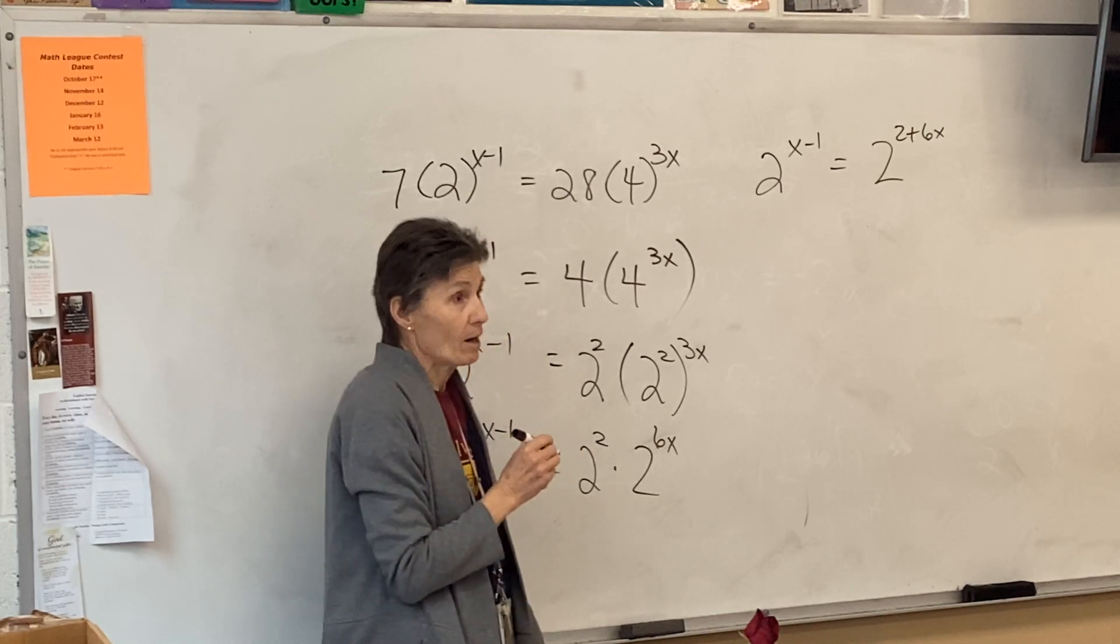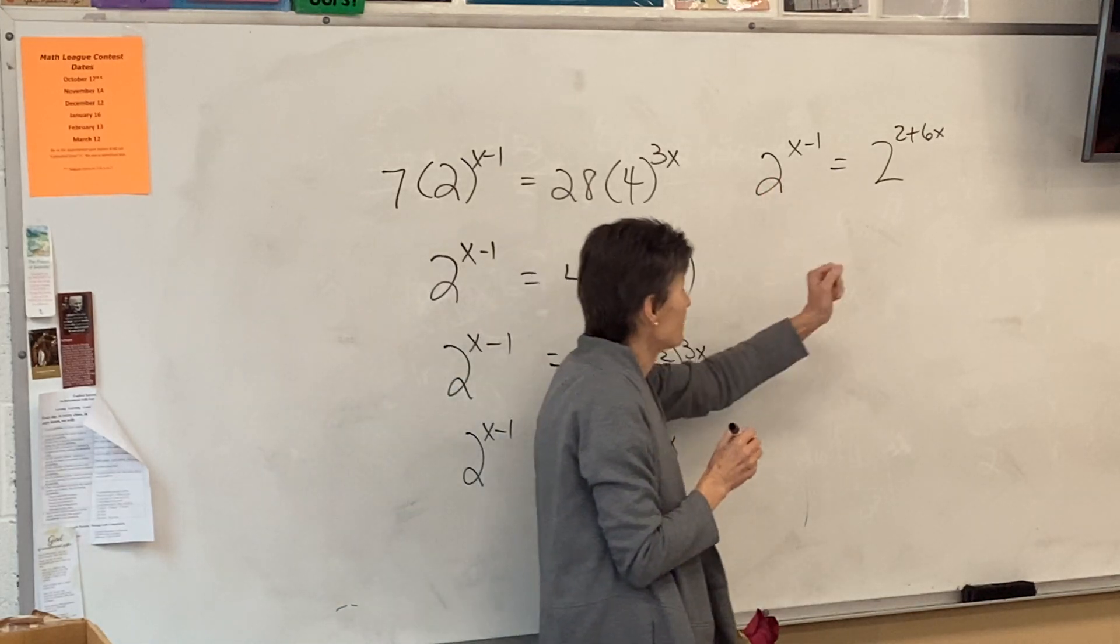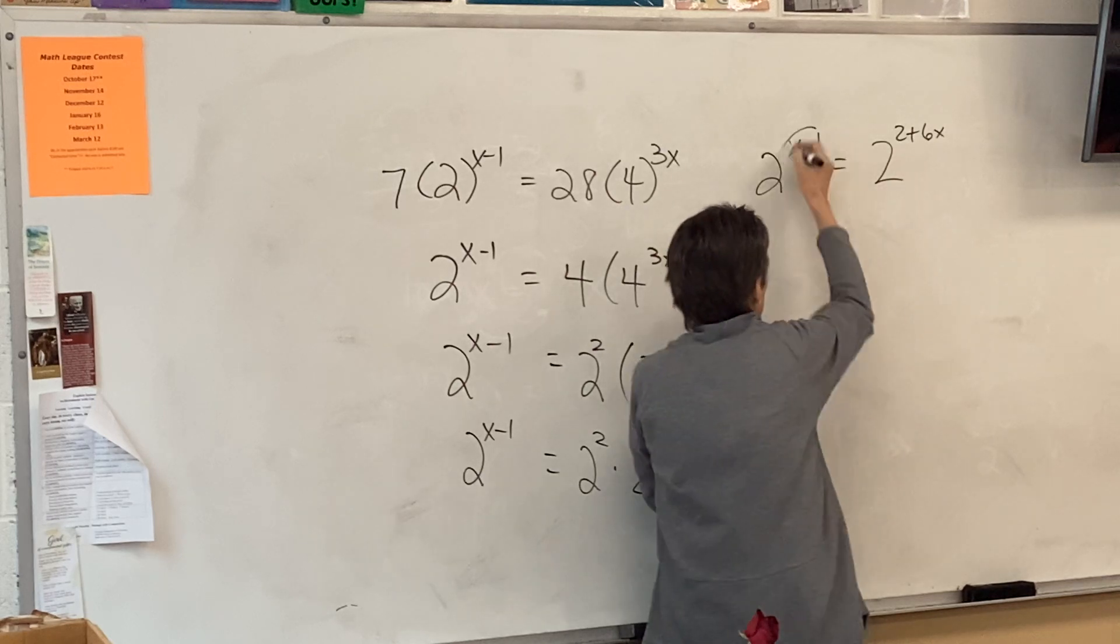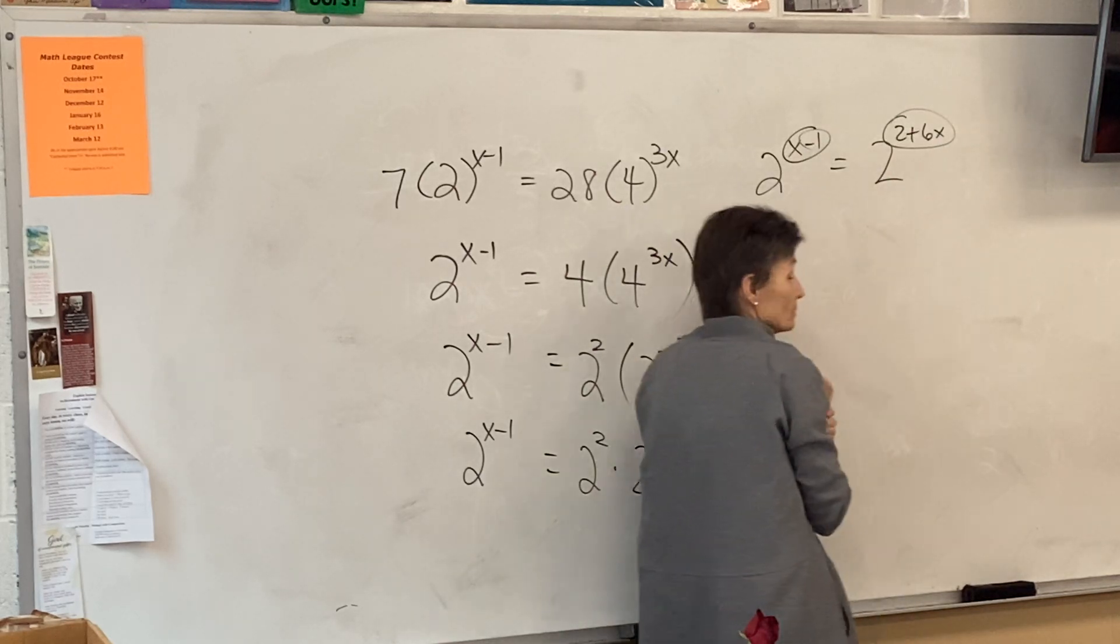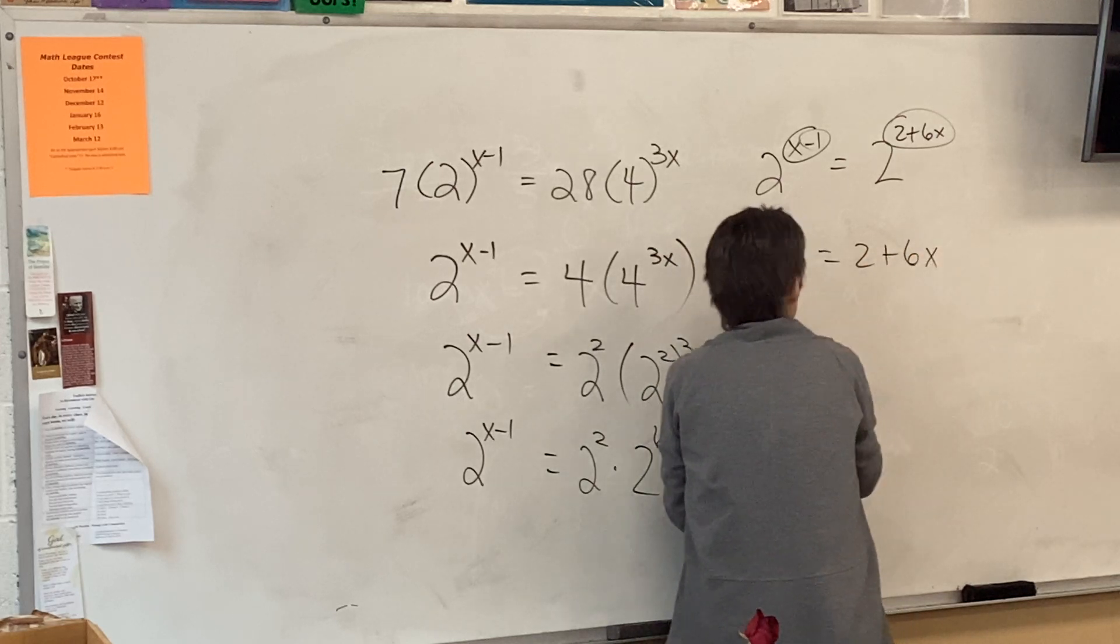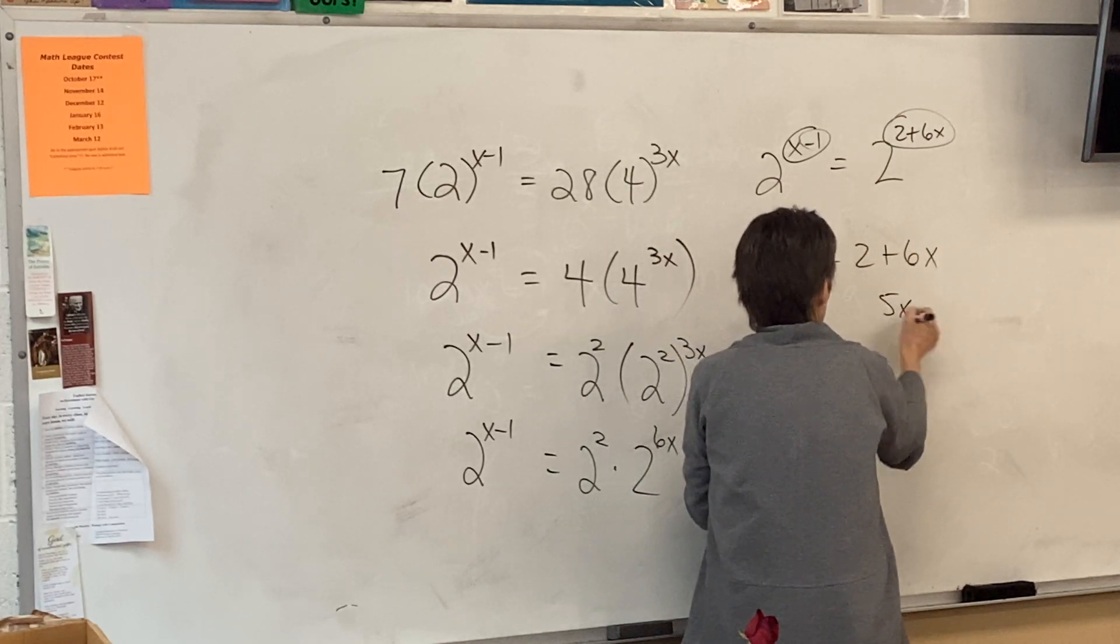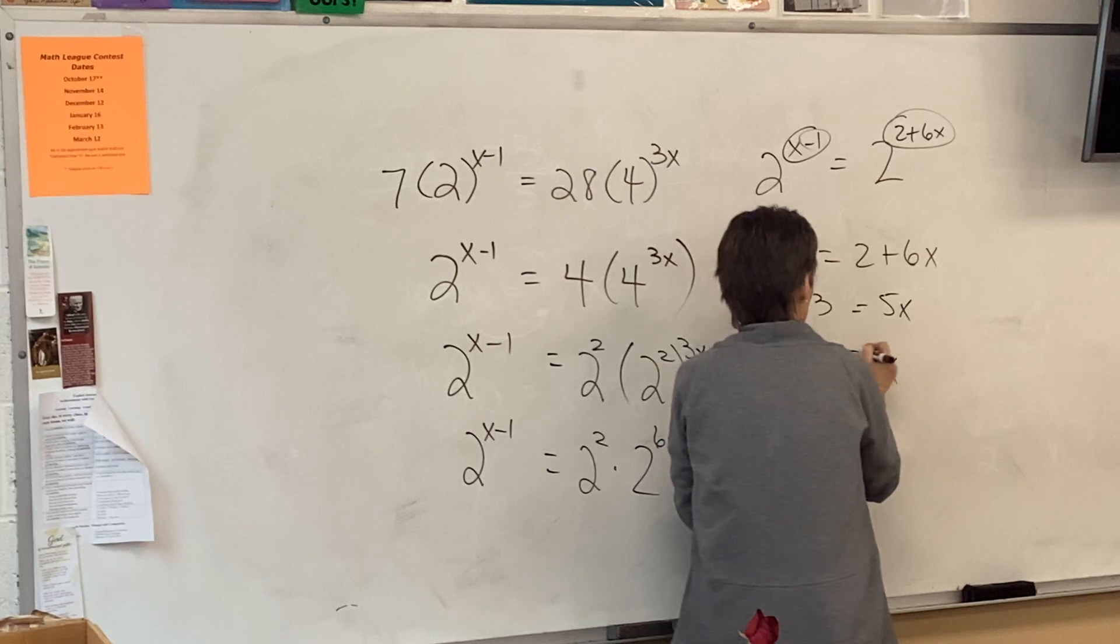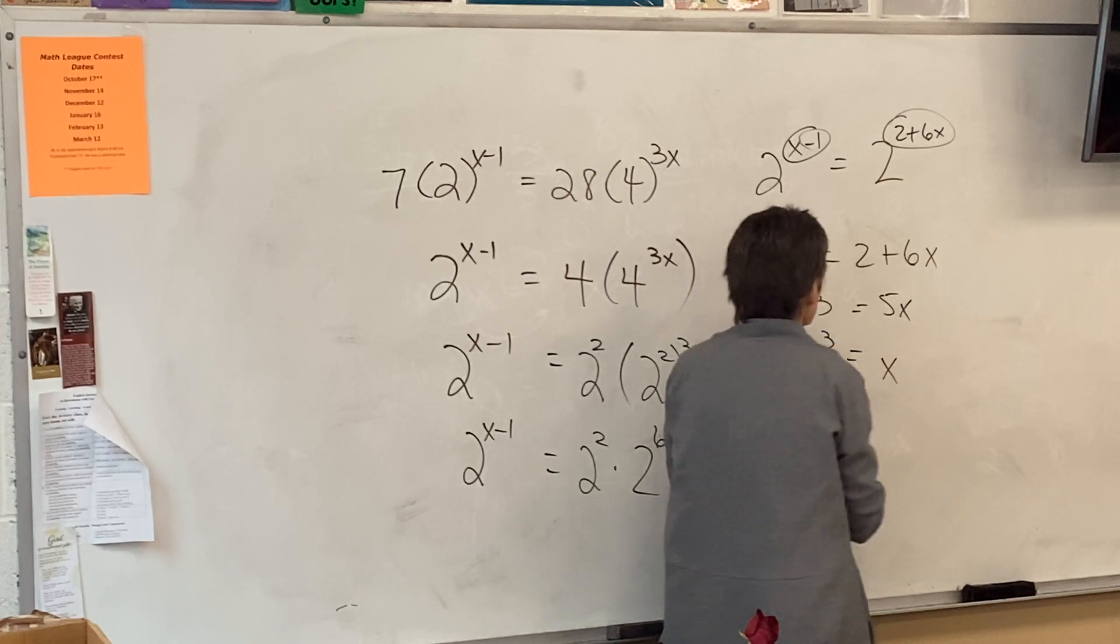So now I have 2 to the x minus 1 equals 2 to the 2 plus 6x. Right? So what can I do now? If 2 to that power equals 2 to that power, don't these have to match? Yes. So x minus 1 equals 2 plus 6x. So 5x equals negative 3. I got negative 3 fifths if I did that right.